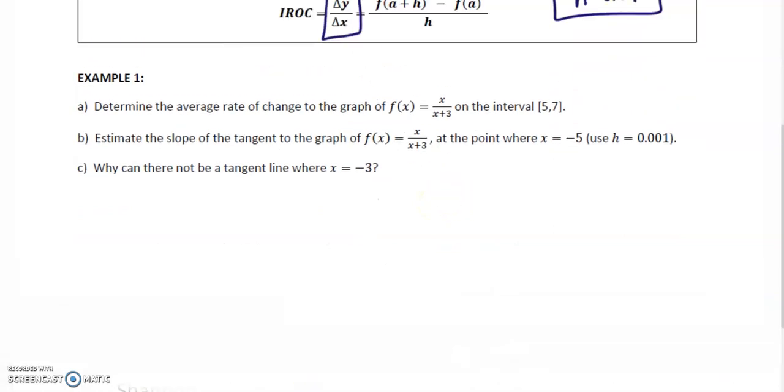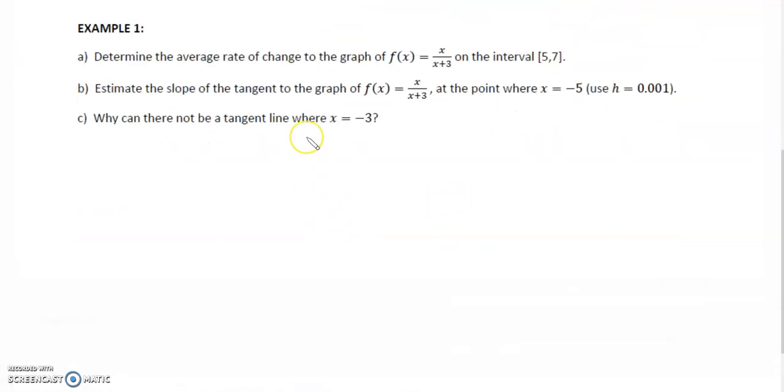Example one: Determine the average rate of change for the graph f of x equals x over x plus 3 on the interval 5 to 7. We want to find f at 5, so we substitute 5 over 5 plus 3, which is 5 over 8.